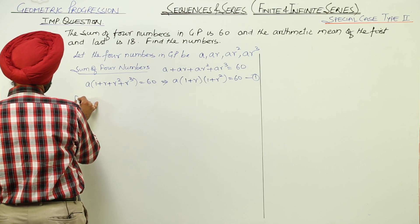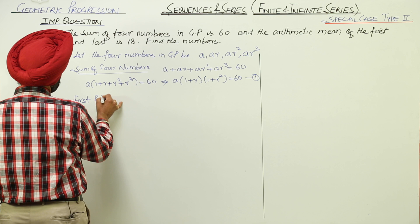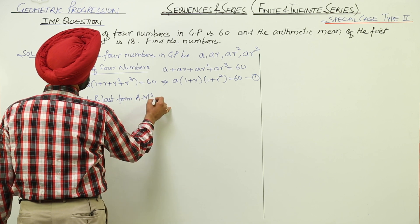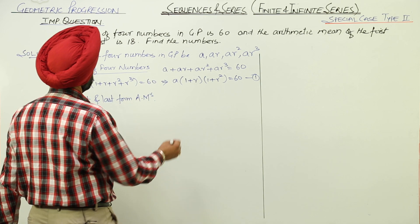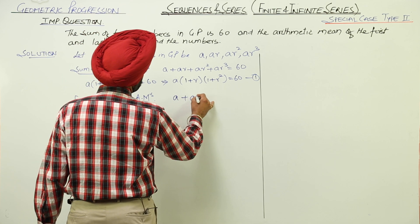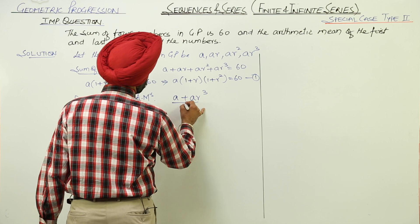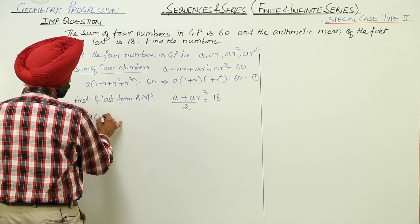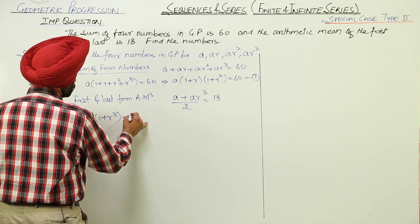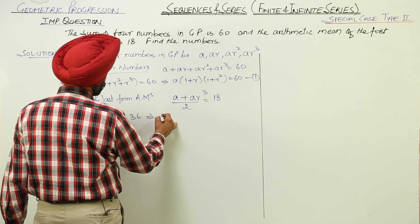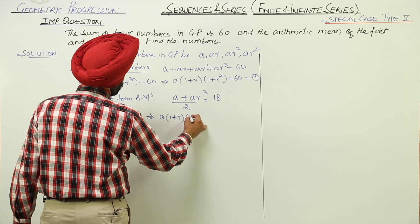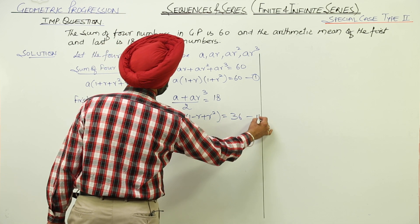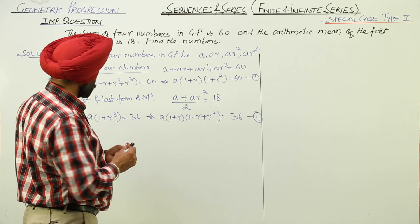Second condition: the first and last terms form an arithmetic mean. So (a + ar³) / 2 = 18, which gives a(1 + r³) = 36. Factorizing using the identity: a(1 + r)(1 - r + r²) = 36. This is equation number 2.